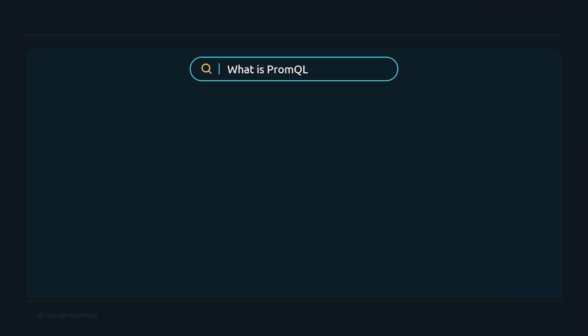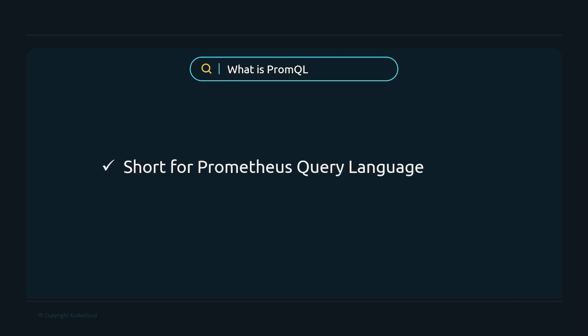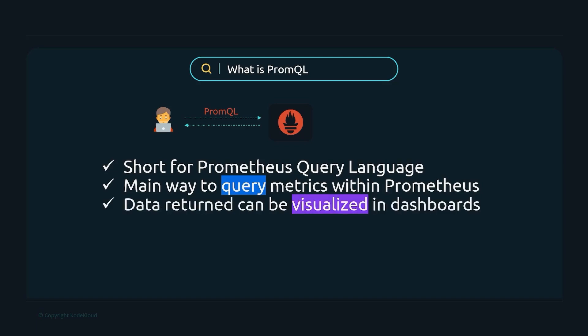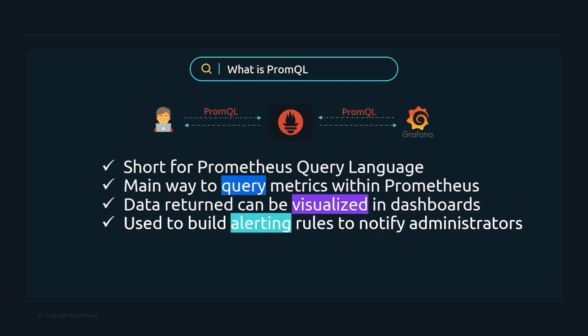PromQL is short for Prometheus Query Language and it's the main way to query metrics within Prometheus. You send a request to the Prometheus server, provide your specific PromQL expression, and it returns data that can be visualized in dashboards, whether through Grafana or the built-in dashboarding tools with Prometheus.